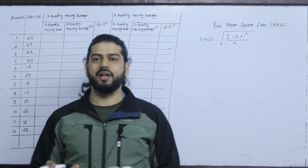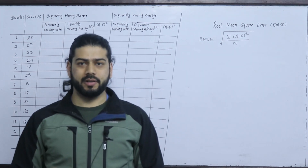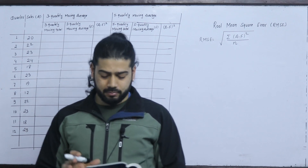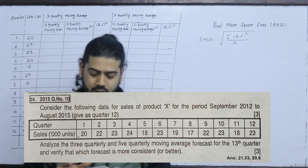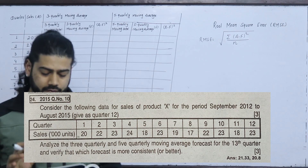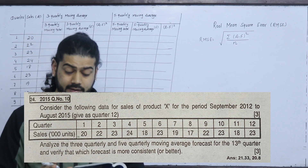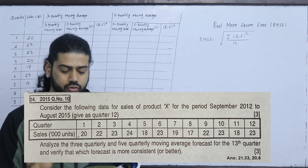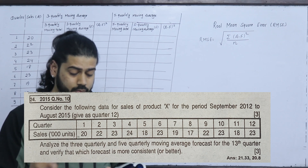Now we have to solve the moving average method. To solve the question, consider the following data for sales of product X for the period September 2012 to August 2015, given as quarters.